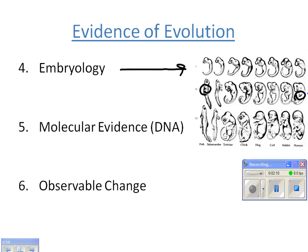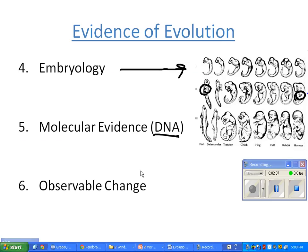In this second row, you see fins starting to form on the fish and arms starting to form on the human at around the same time. Although one becomes a fin and the other an arm, it's still suggesting that the pectoral appendage forms at the same time across many different species.